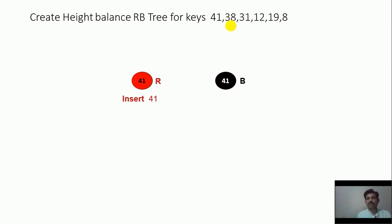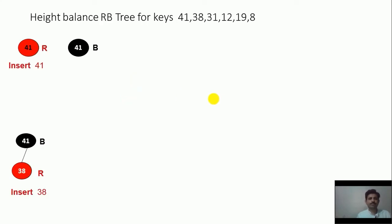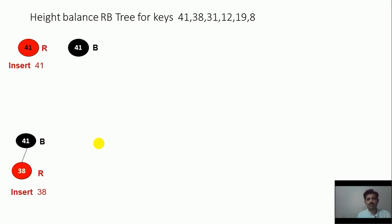Now we have to insert the second key 38. Since 38 is smaller than 41, it will come on the left side and the color of 38 will be red. The parent of 38 is 41, which is black. All the cases will be applied only when the color of p of g — the parent of any key — is red. Since the parent is black, we will apply no cases.